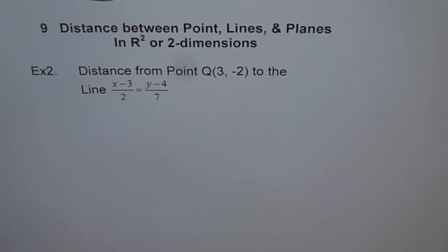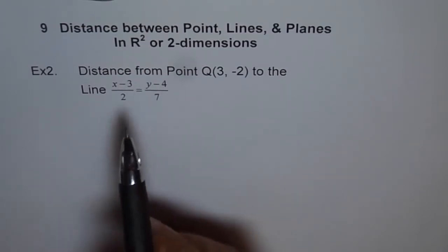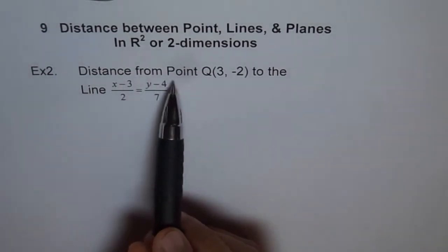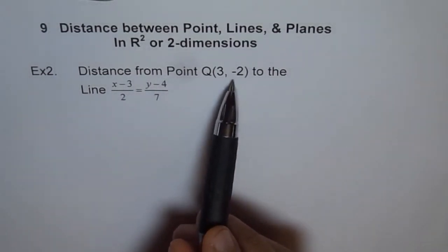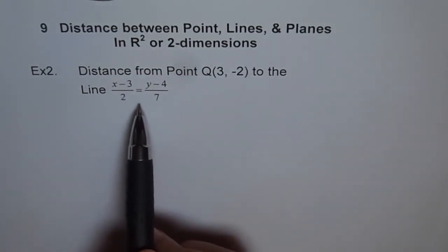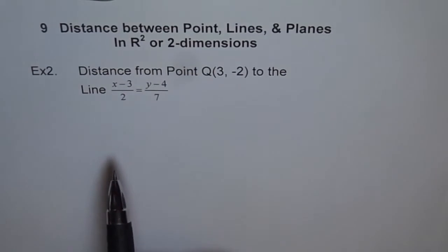Distance between point, lines and planes in R² or 2 dimensions. This is example 2 and we are using the same point in all our examples here. Distance from point Q(3, -2) to the line (x-3)/2 = (y-4)/7.